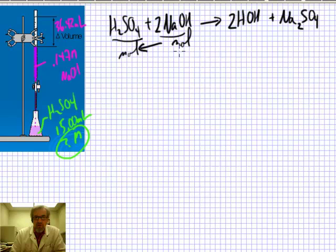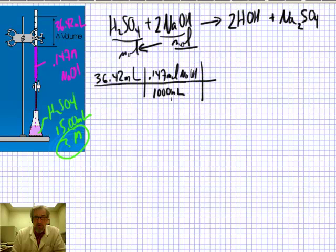I can figure out moles because I know what the definition of molarity says. So starting out here, I'm going to go 36.42 milliliters of solution were delivered. But I know that solution had 0.147 moles of NaOH in every liter, or in other words, in every thousand milliliters. And I chose thousand milliliters here so that I can get milliliters to cancel.